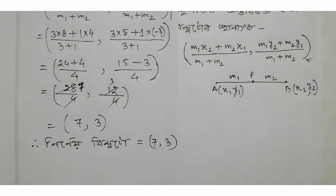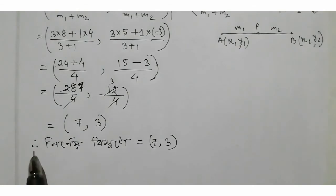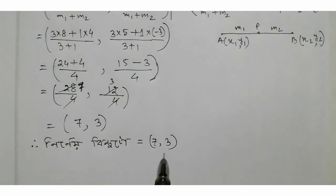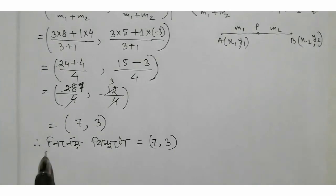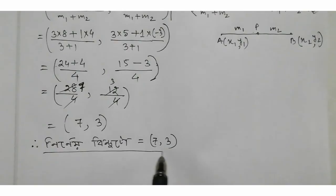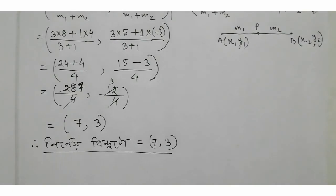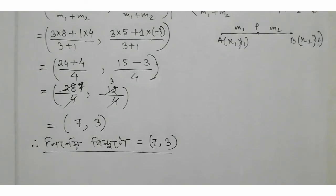That's 7. I'm going to write the number. We're going to write the result — this is going to be (7, 3). So point P is (7, 3). See you in the next video.